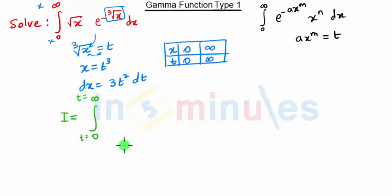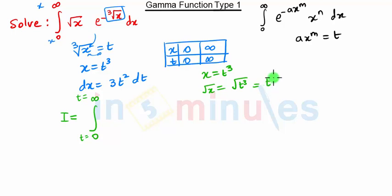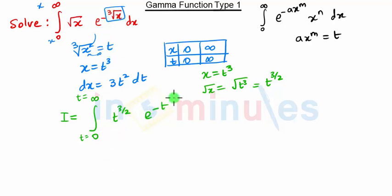So our equation becomes I equal to integration of 0 to infinity. Since x equals t cube, root of x equals root of t cube, which can be written as t raise to 3 by 2. So root x is replaced by t raise to 3 by 2. And e raise to minus cube root of x is replaced by t, and dx is replaced by 3t square dt.